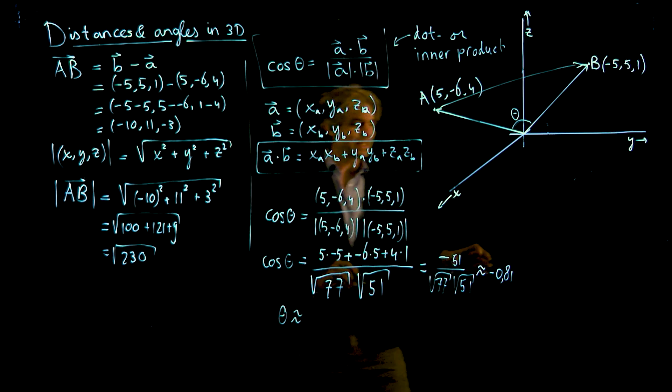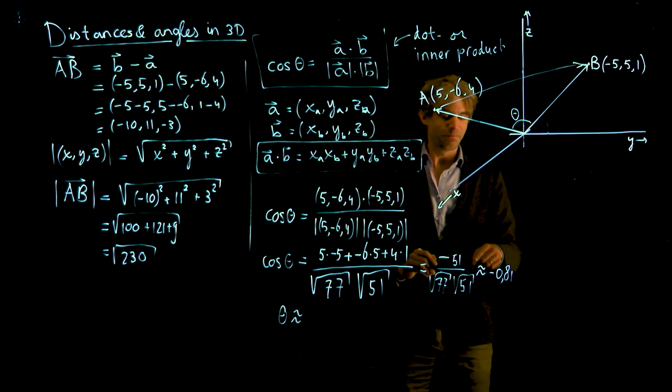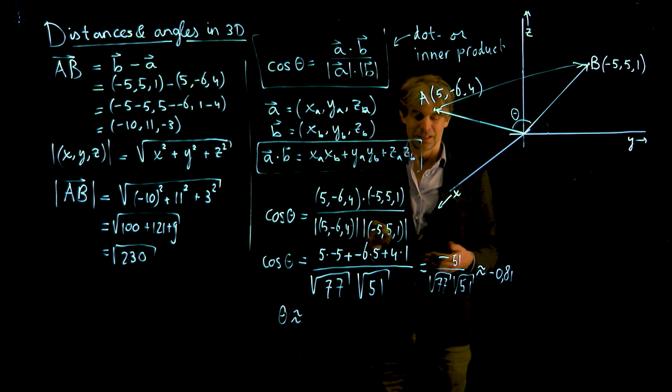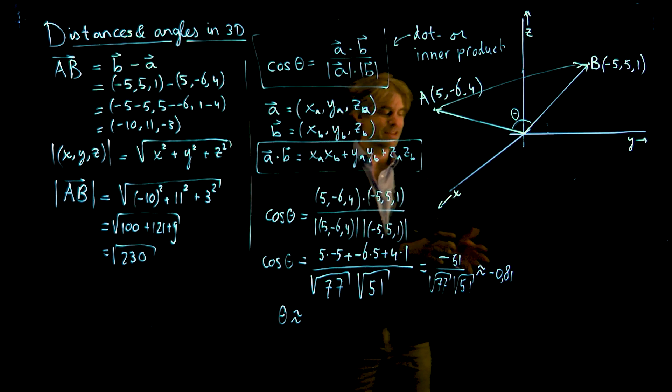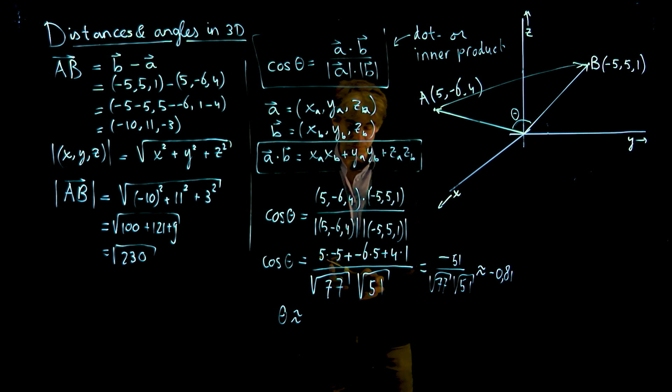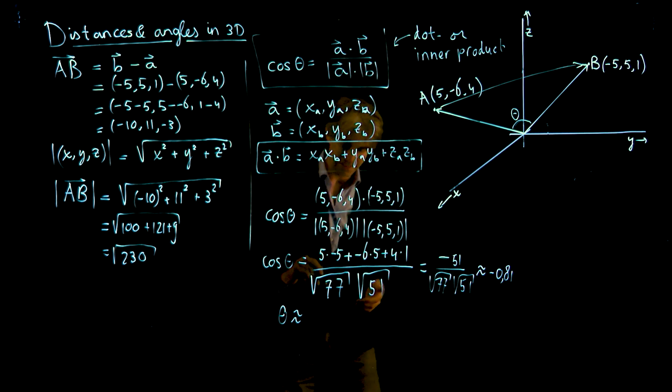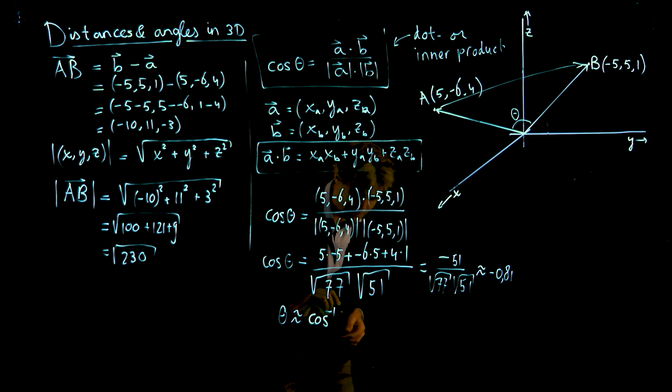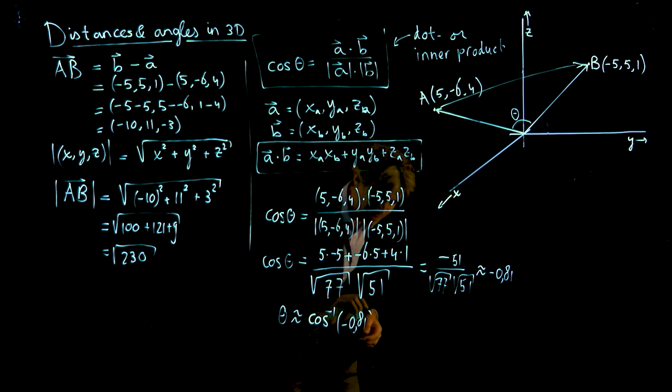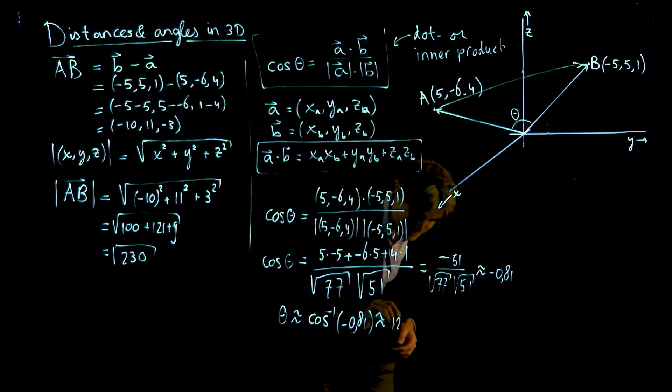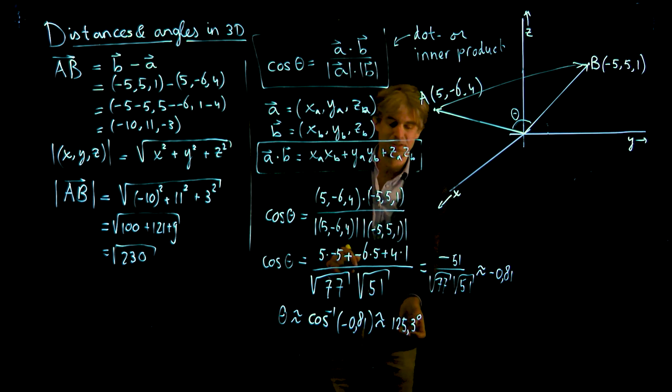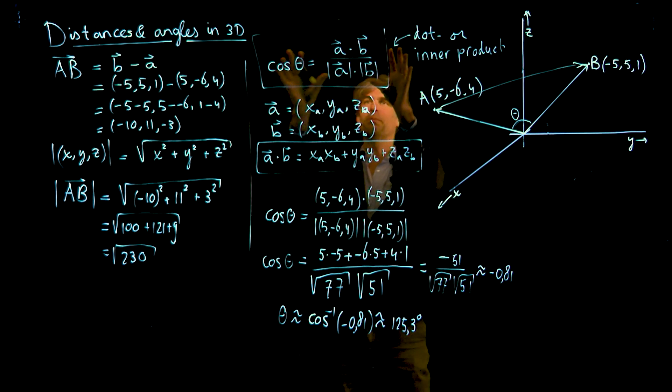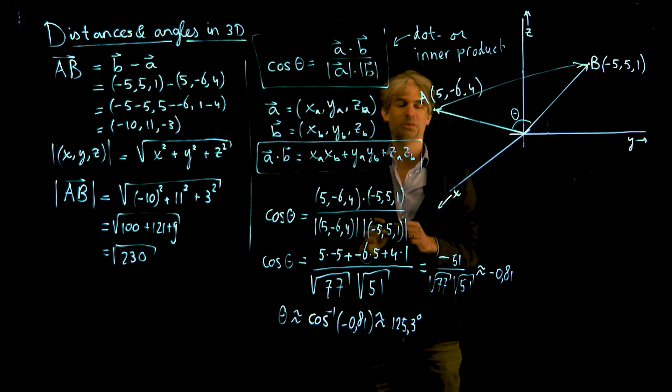So now I know that the cosine of theta equals approximately minus 0.81. I can compute what theta is approximately. I'm quite happy that this number ended up between minus 1 and plus 1. This is a great check because the cosine should always end up between minus 1 and 1. If it doesn't, then you know you have to do it again. If you take the inverse cosine or arc cosine of minus 0.81, you'll find approximately 125.3 degrees.